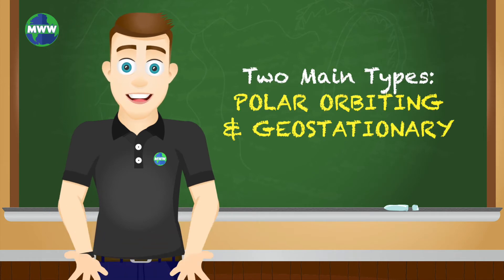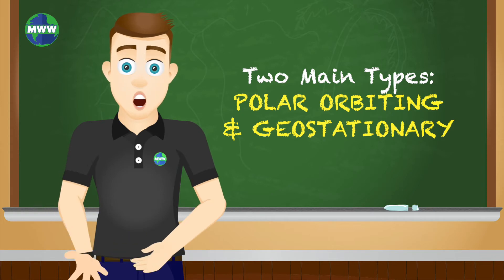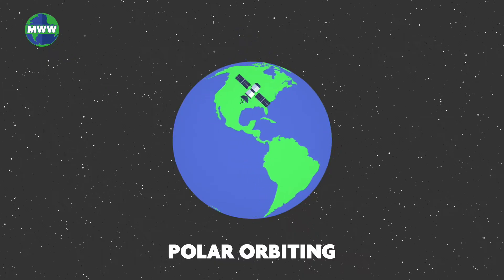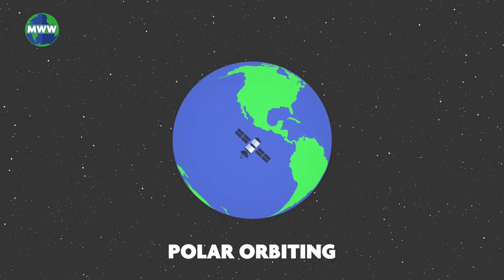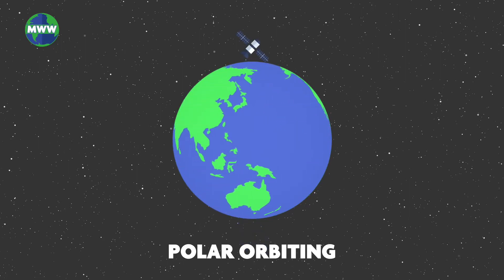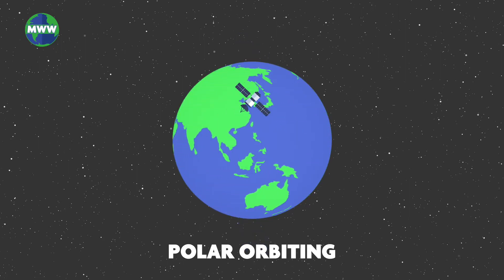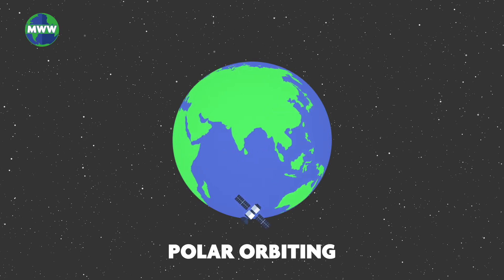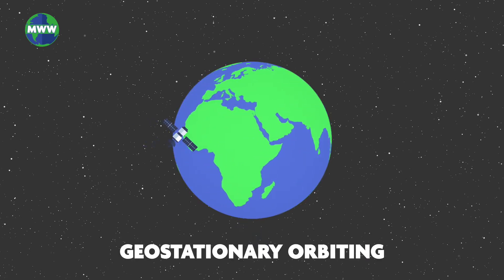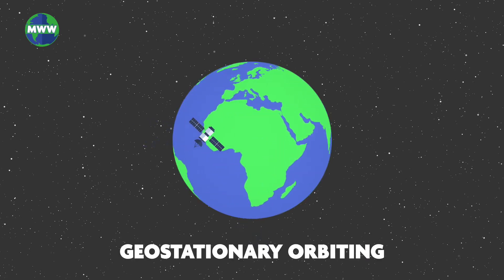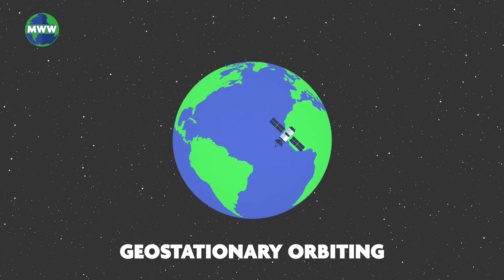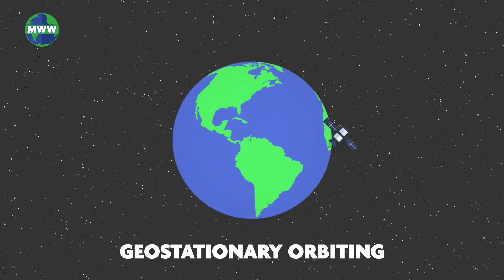There are two main types of weather satellites: polar orbiting and geostationary. Polar orbiting satellites move in a latitudinal motion around the Earth, crossing the North and South Poles, moving around the planet approximately 14.1 times a day. Geostationary satellites stay in a fixed position over the Earth's surface, revolving in the same direction the planet rotates, from west to east.